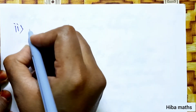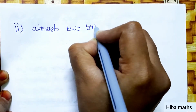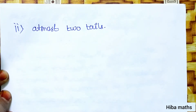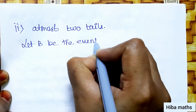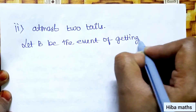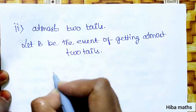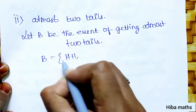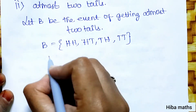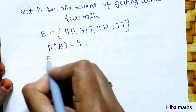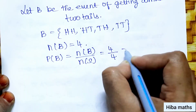Second subdivision: at most two tails. Now B is the event of at most two tails. The possible outcomes are HH, HT, TH, and TT — all outcomes in the sample space satisfy this condition. So n(B) equals 4. Now probability of B is n(B) by n(S), that is 4 by 4, which is equal to 1.